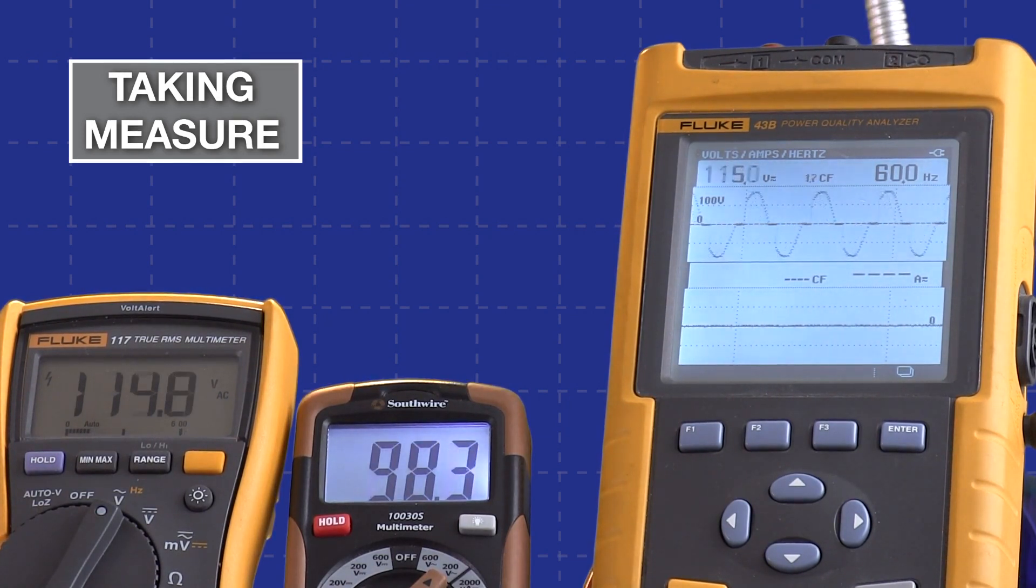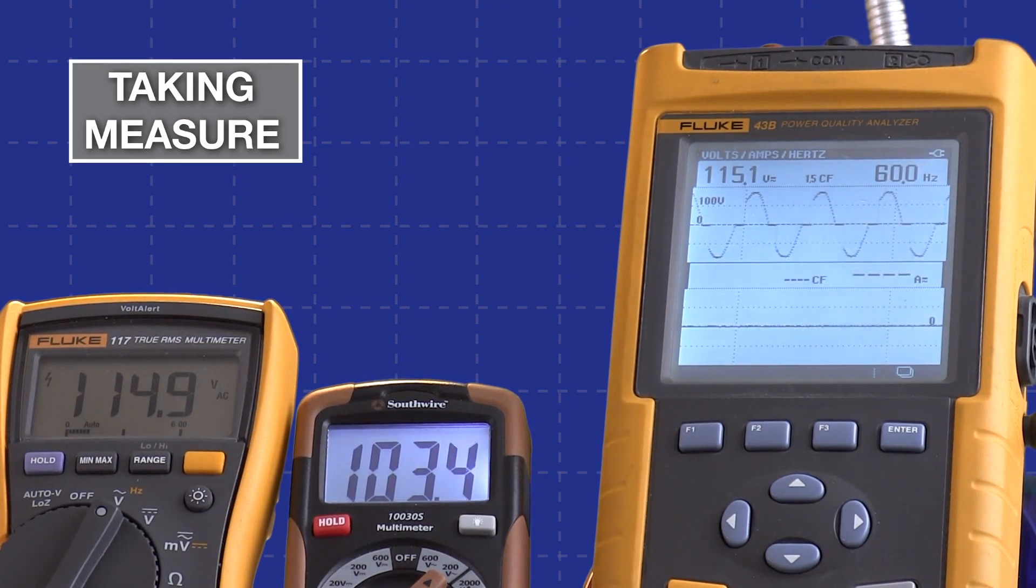If I ramp up more and go all the way to the top, you can see I'm showing 115 volts on the Fluke—114.9, now it's 115 on the 117—but the Southwire is down at 103. You'll also notice again that we're not getting the full voltage because the dimmer does eat up a little bit of voltage. But the measurements are different on those.